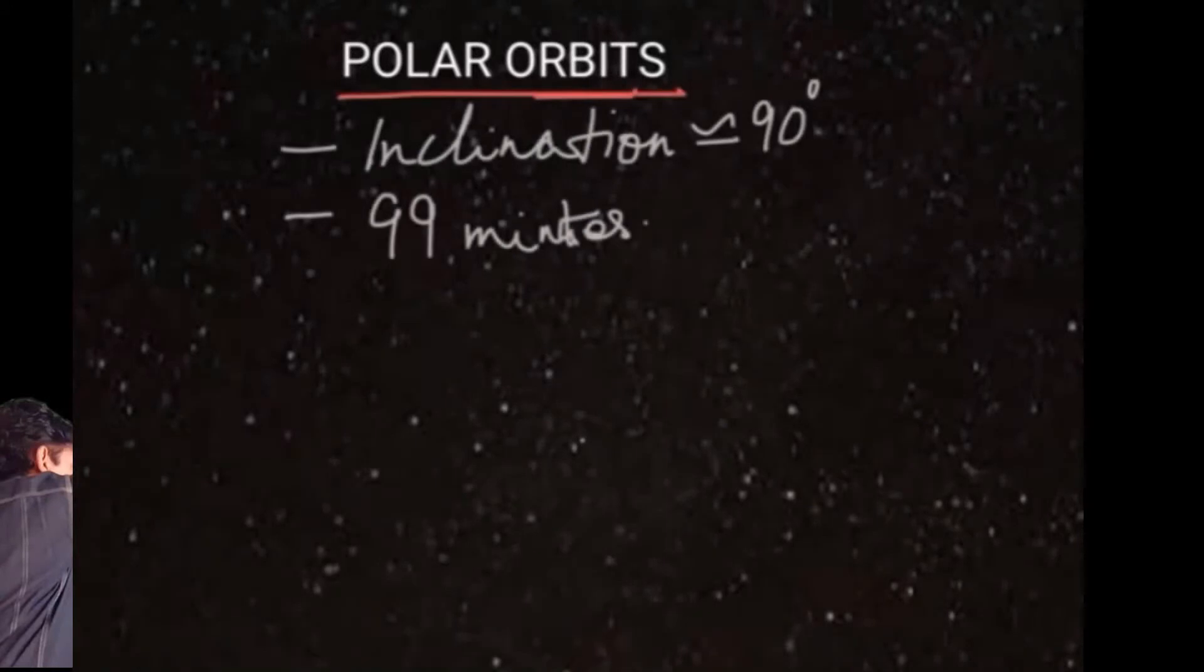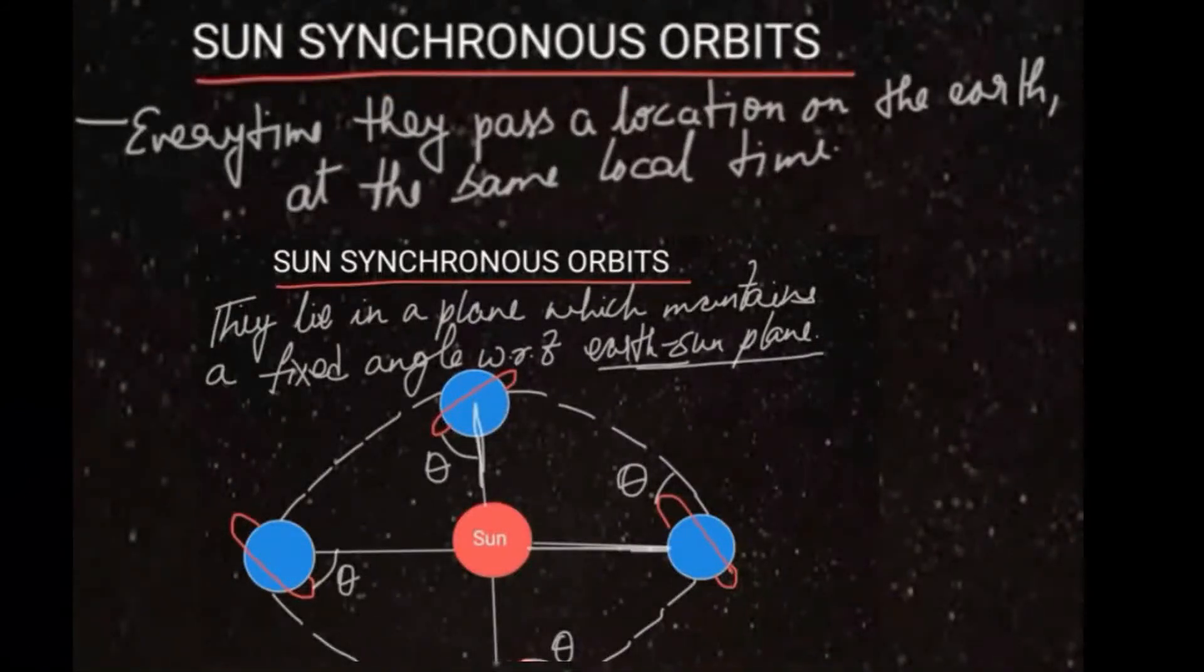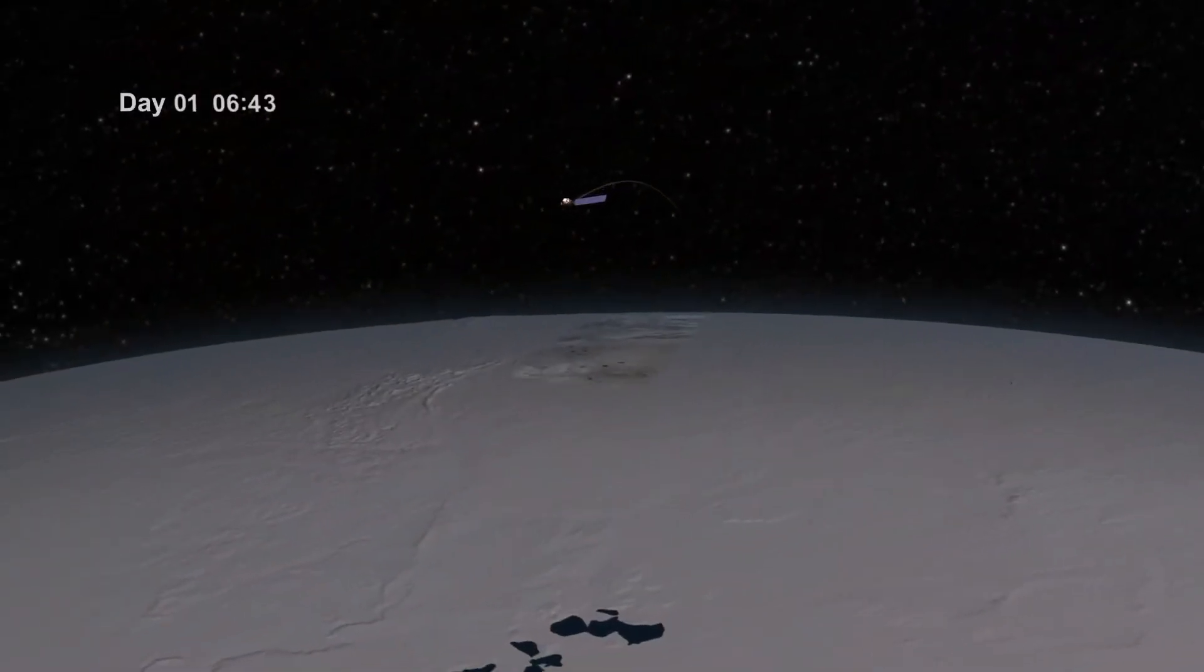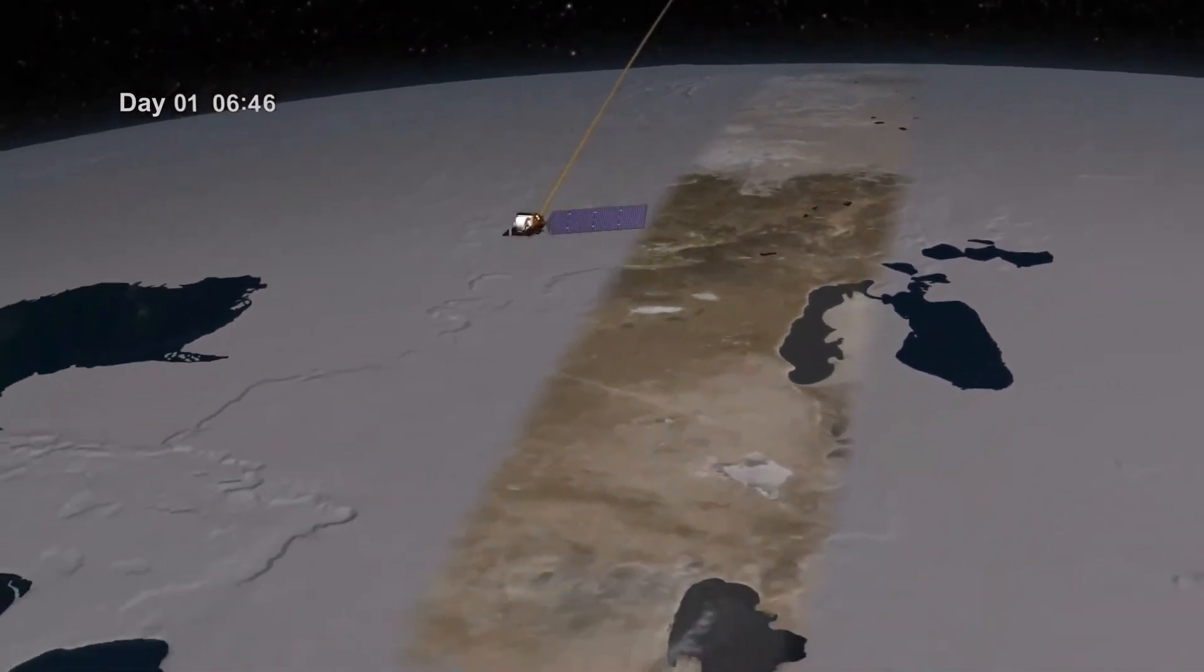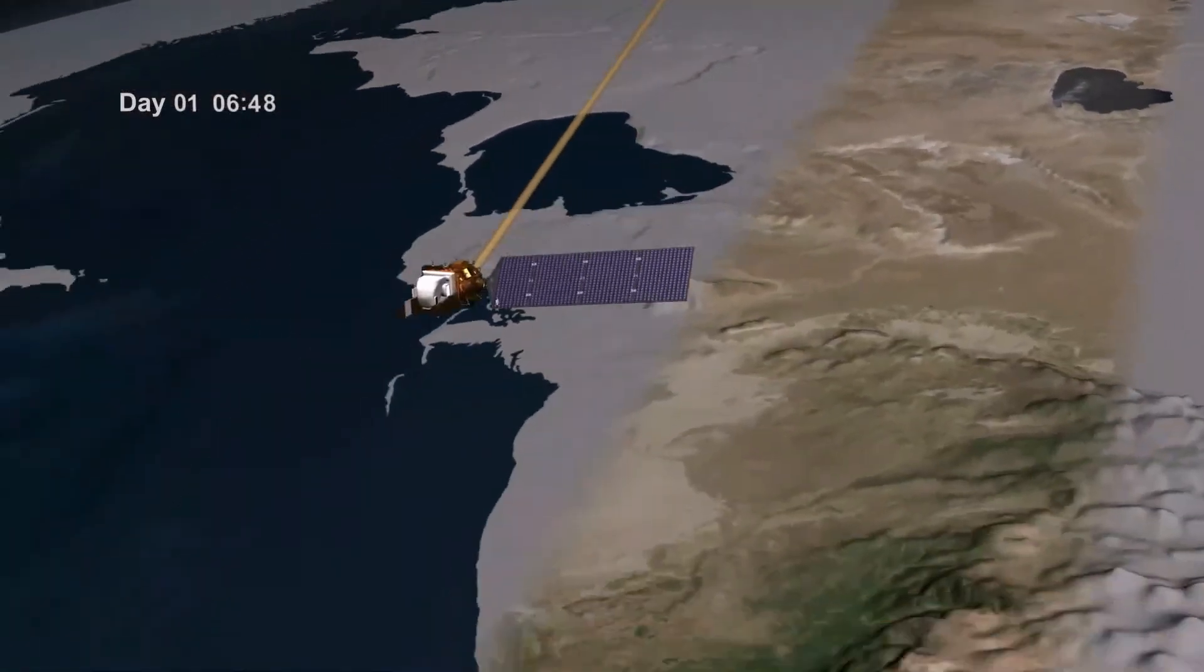synchronized with Earth's rotation so that every time it maintains the same solar position. This is sun-synchronous. So when polar satellites are moving over the Earth's surface,